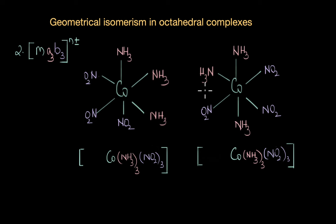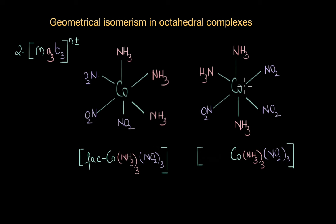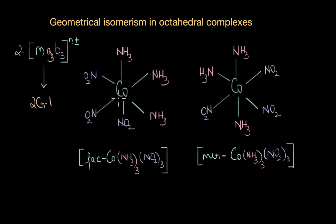For example, one isomer has ammonia ligands at trans positions, but also has an ammonia ligand adjacent to another, so it doesn't neatly fall into a cis or trans category. For this reason, these isomers have different names. Complexes where three identical ligands occupy three adjacent positions are called facial isomers, and those where the three identical ligands are located along a meridian are called meridional isomers.